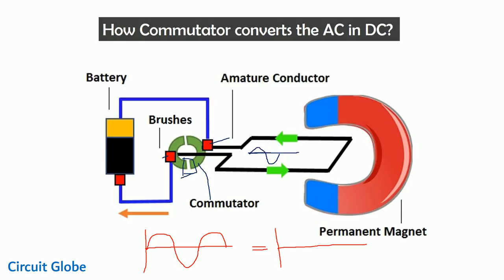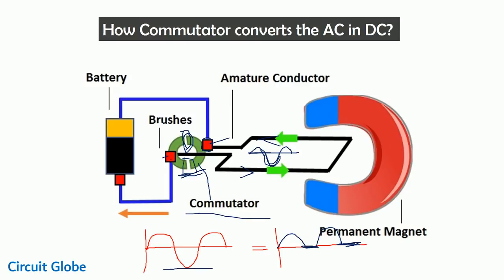When the positive half cycle of the alternating current induces in the coil, that positive half cycle we are obtaining with the help of the brushes. Now after half cycle, when the negative half cycle induces in the coil, in that condition the commutator rotates. After half rotation, the air gap connects to the brushes — in that case we are not getting any output because no commutator is connected with the brushes. Again after half cycle, the polarity of the commutator changes, and for the next positive half cycle we are getting the output. But again, when the air gap of the commutator touches the brush, we are not getting any output. In this manner, the commutator converts the alternating current of the armature conductor into the DC current.